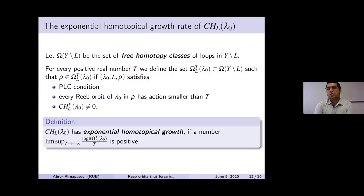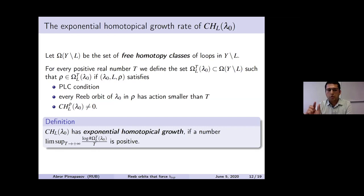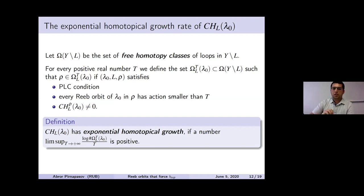For exponential homotopical growth, we count free homotopy classes of loops in the complement of L. We take the subset satisfying three conditions: first, a PLC condition (technical); second, every Reeb orbit of λ₀ in this homotopy class has action smaller than T; and third, the cylindrical contact homology in the given homotopy class is non-zero. If the count of such homotopy classes grows at least exponentially in T, we say the cylindrical contact homology has exponential homotopical growth.